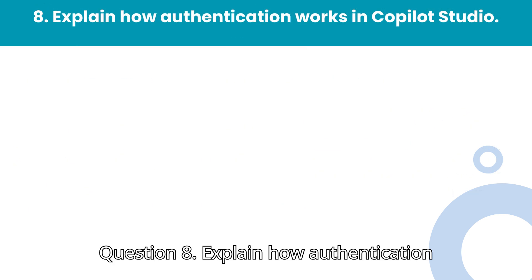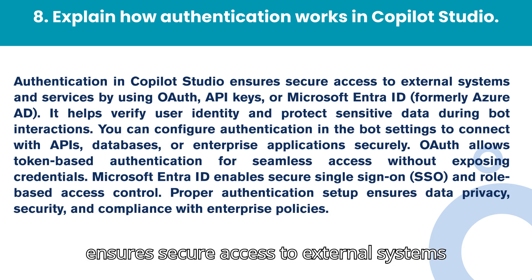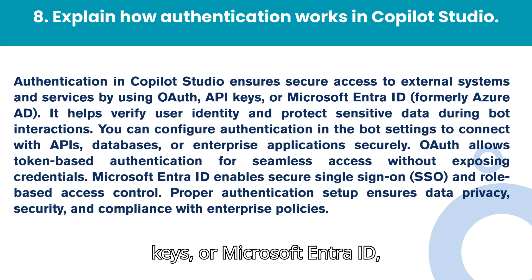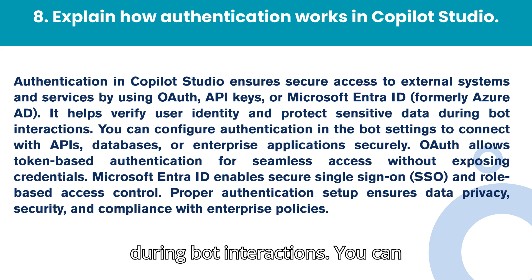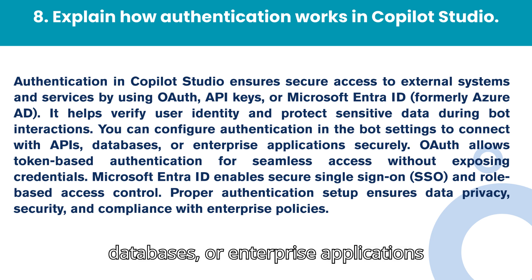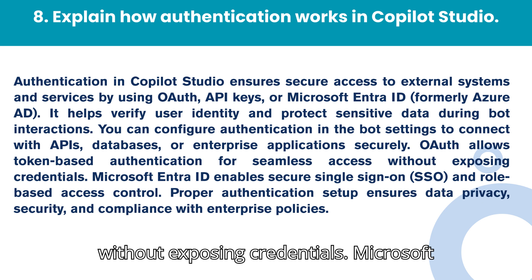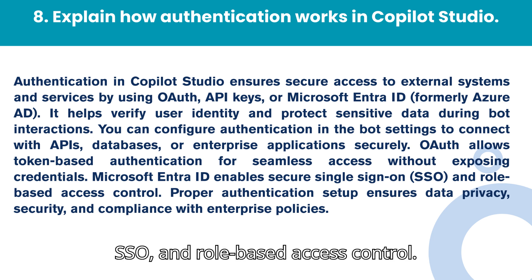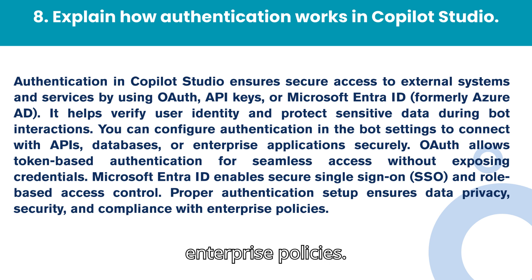Question 8: Explain how authentication works in Co-Pilot Studio. Authentication in Co-Pilot Studio ensures secure access to external systems and services by using OAuth, API keys, or Microsoft Entra ID. It helps verify user identity and protect sensitive data during bot interactions. You can configure authentication in the bot settings to connect with APIs, databases, or enterprise applications securely. OAuth allows token-based authentication for seamless access without exposing credentials. Microsoft Entra ID enables secure single sign-on (SSO) and role-based access control. Proper authentication setup ensures data privacy, security, and compliance with enterprise policies.